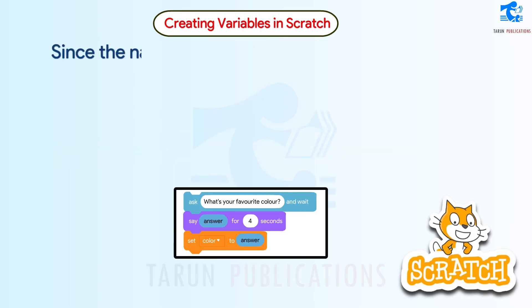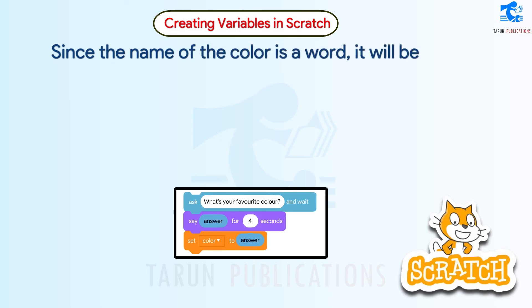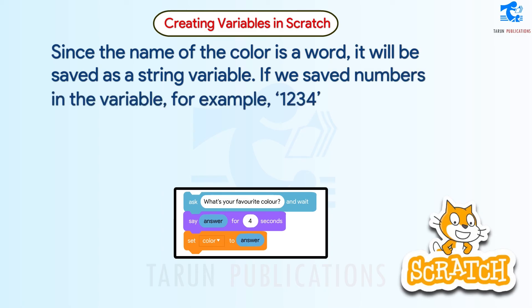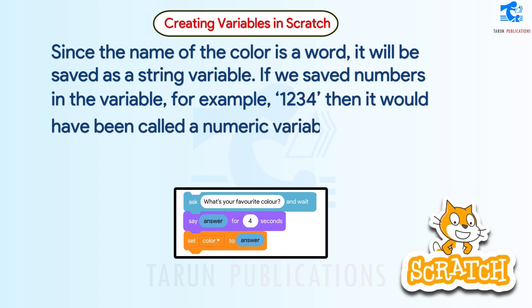Since the name of the color is a word, it will be saved as a string variable. If we saved numbers in the variable — for example, 1234 — then it would be called a numeric variable.